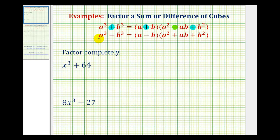And if we have a binomial in the form a cubed minus b cubed, the first binomial factor is a minus b, and the trinomial factor is a squared plus ab plus b squared.